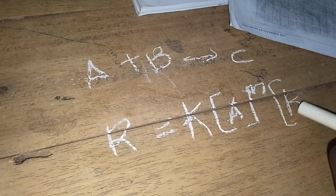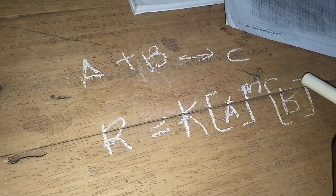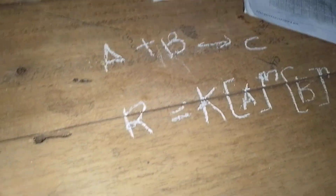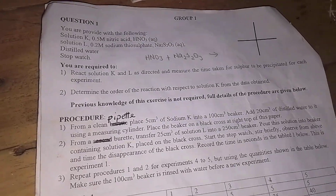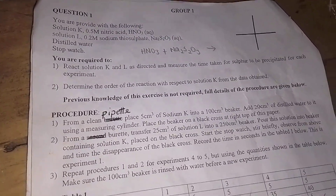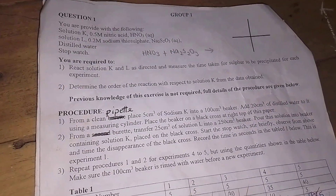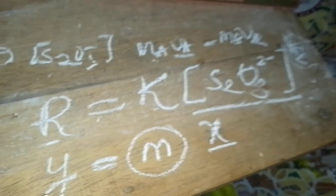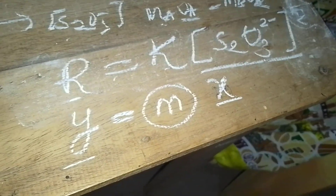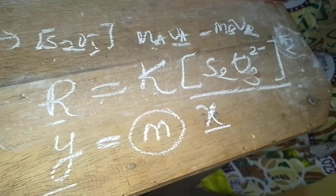In this reaction with sodium thiosulfate and nitric acid, the concentration of nitric acid does not change in any experiment — it remains constant. Therefore, when writing the rate expression, we omit the concentration of nitric acid. If I then plot the graph of rate against the concentration of sodium thiosulfate, the shape of the graph allows us to deduce the order of the reaction with respect to sodium thiosulfate.